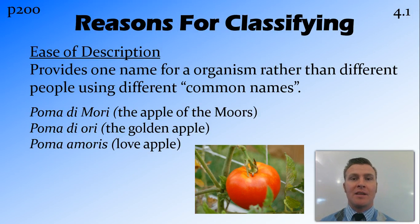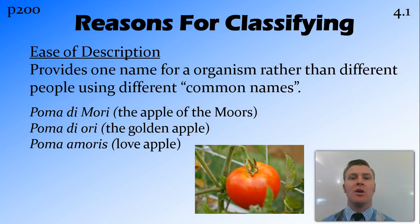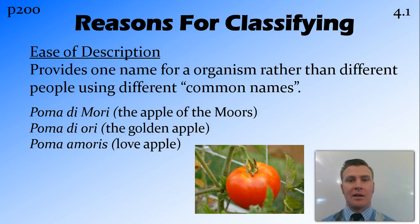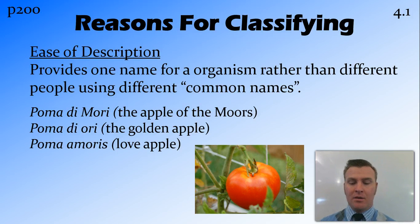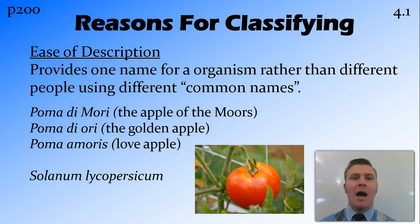Another thing that makes describing things easier is that by having a classification system and a scientific name, it provides one name for all scientists around the world to use when talking about a particular thing. The common name we use today is tomato, but some of the common names around the time the current classification system was adopted include the apple of the moors, the golden apple, and the love apple. By having one name — Solanum lycopersicum — we're able to have everybody talking about the same organism.